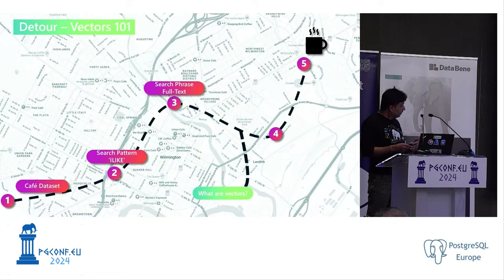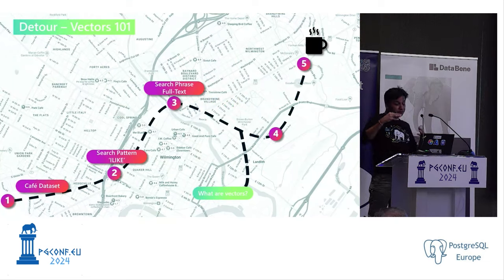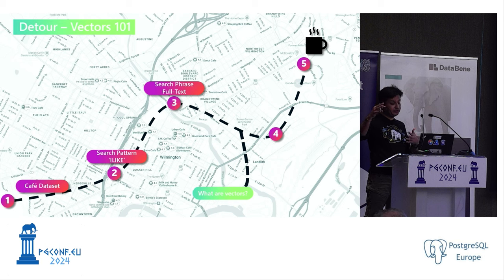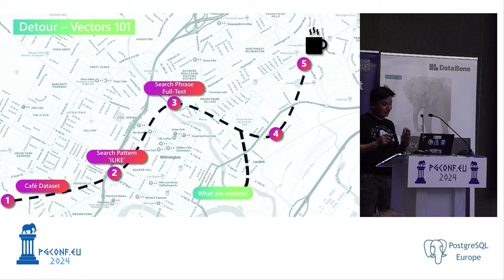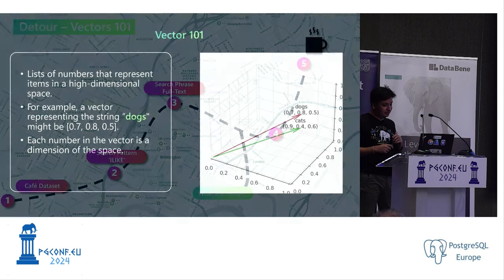So let's move on to semantic search. Before we begin, the foundation of semantic search is vectors, so we're going to do a little detour and understand what vectors are — a Vector 101 at a very basic foundational level.